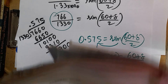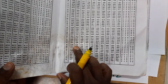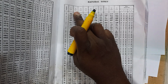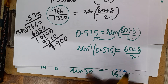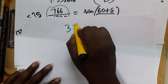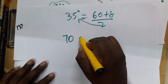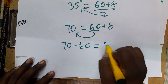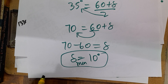Looking up 0.575 in the sine table, we get approximately 35 degrees (35° 10' to be precise, but approximately 35°). So: 35 = (60 + δ_min)/2, which gives 70 = 60 + δ_min, and therefore δ_min = 10 degrees. The minimum deviation when the prism is placed inside water is 10 degrees. Thank you for watching — please subscribe.